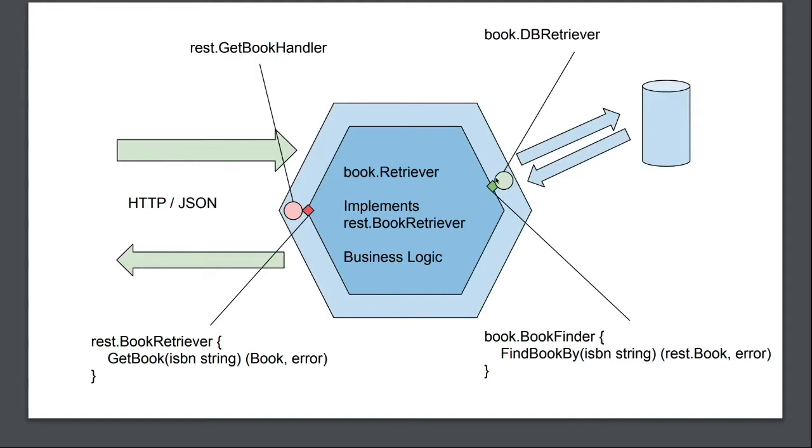This shows how we have applied hexagonal architecture layout to our book API. Let's talk through some of the advantages of applying this architectural style to our code.